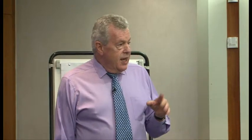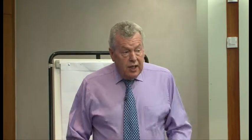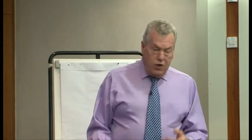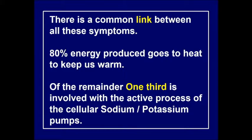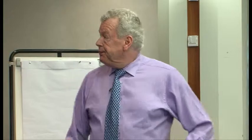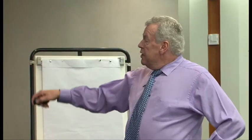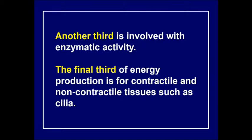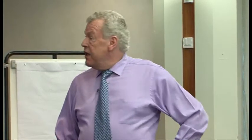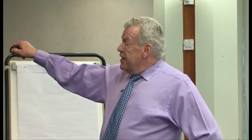80% of all energy produced in the body is for heat, and with heat goes light — we actually have a glow of low luminosity. That's why we have fat as insulation to keep us warm. If you lose subcutaneous fat, you feel cold because you lose heat much quicker. The middle third of the remaining 20% is involved with enzymic activity — many enzymes use ATP to donate phosphate or adenosine groups.